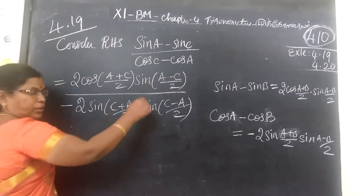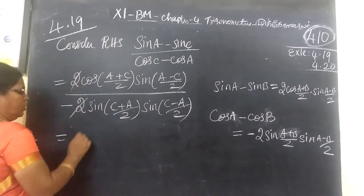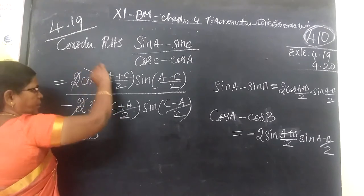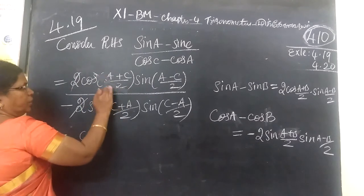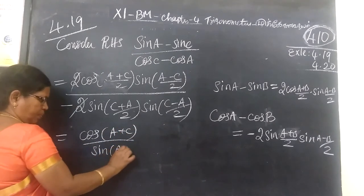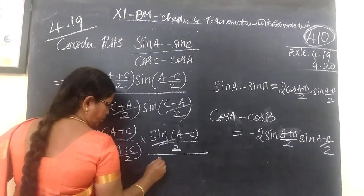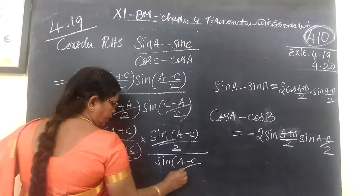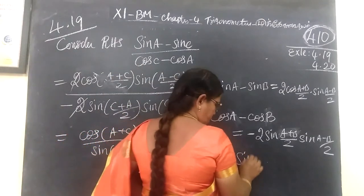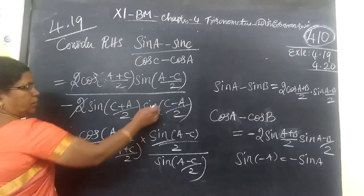Now, substituting and simplifying, we get sin (A minus C)/2 terms in both numerator and denominator, so they cancel. We are left with a cos over sin expression, which gives us cot of (A plus C)/2.